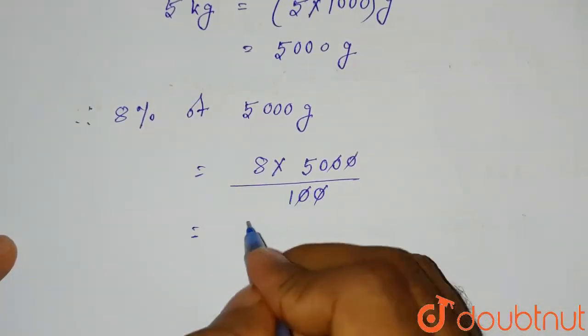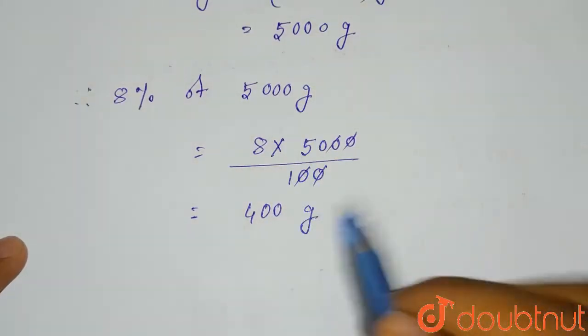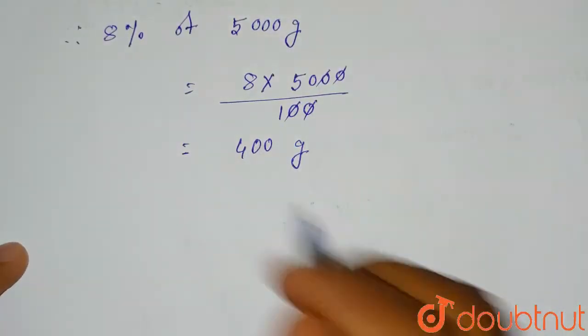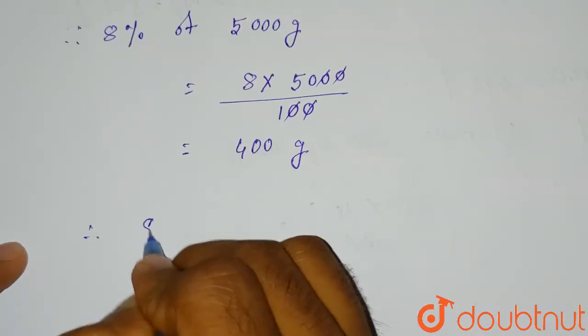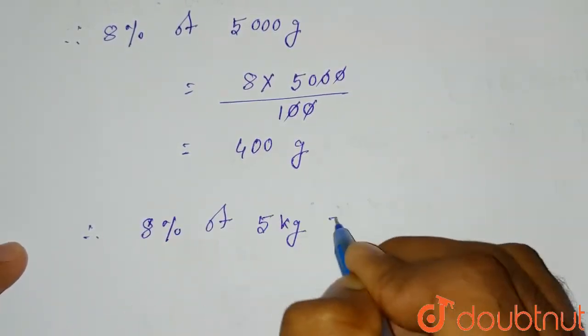400 gram. So 8 percent of 5000 gram is 400 gram. As 5000 gram is 5 kg, therefore 8 percent of 5 kilogram is equals to 400 gram.